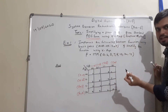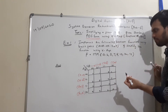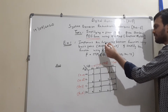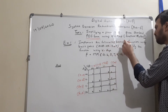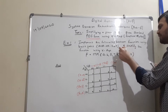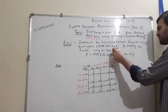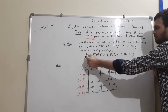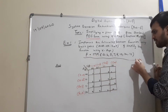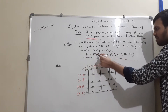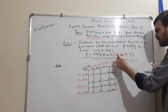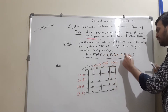Let us start directly with an example. The example states: implement the following Boolean function using basic gates and simplify the function using KMAP. The Boolean function given is f = π M(0, 2, 5, 7, 8, 10, 12, 14).